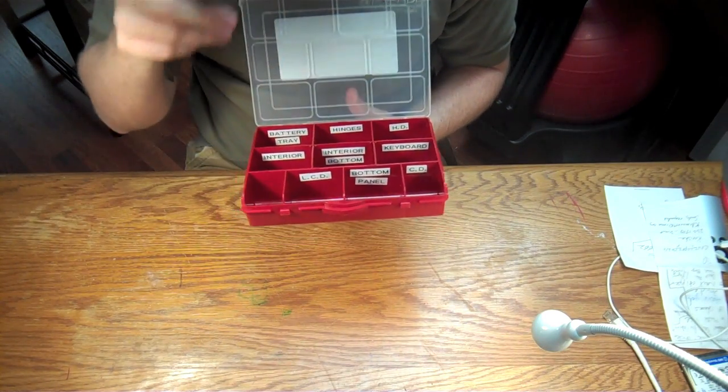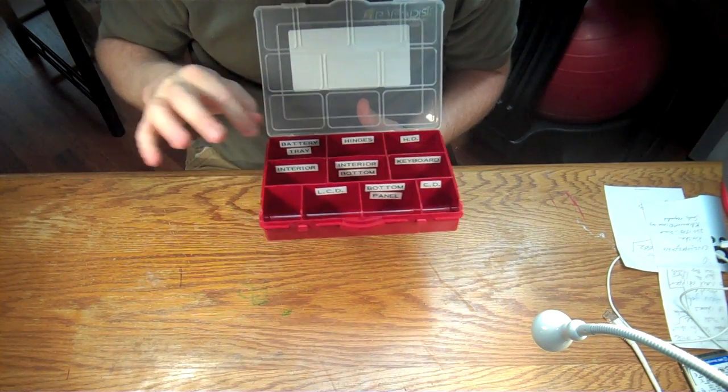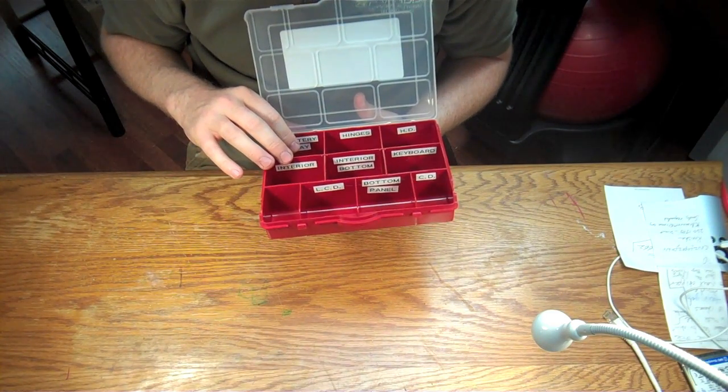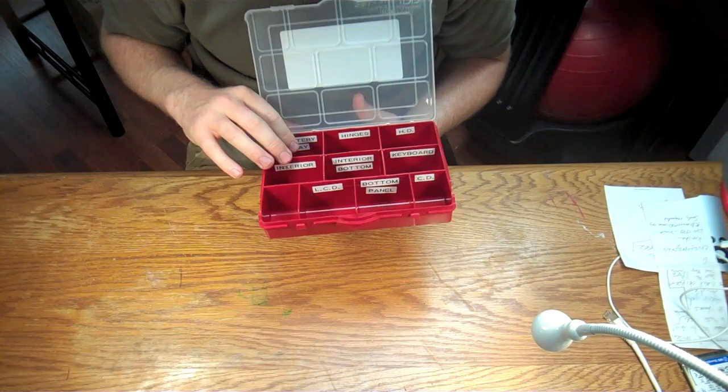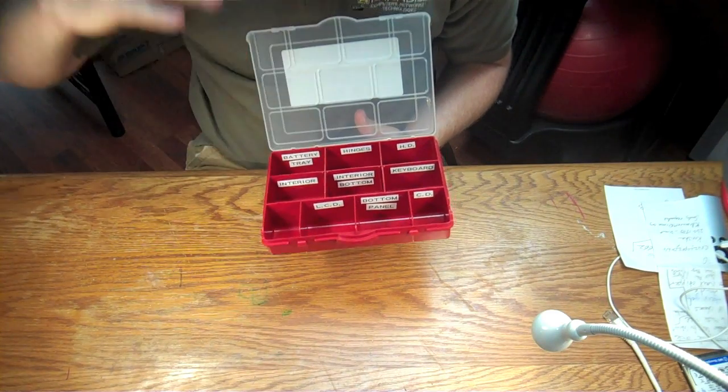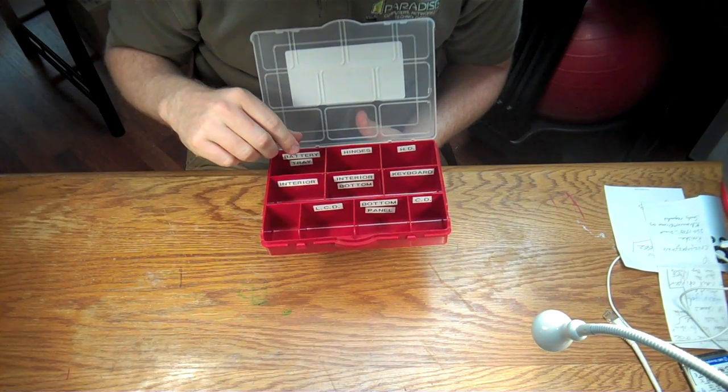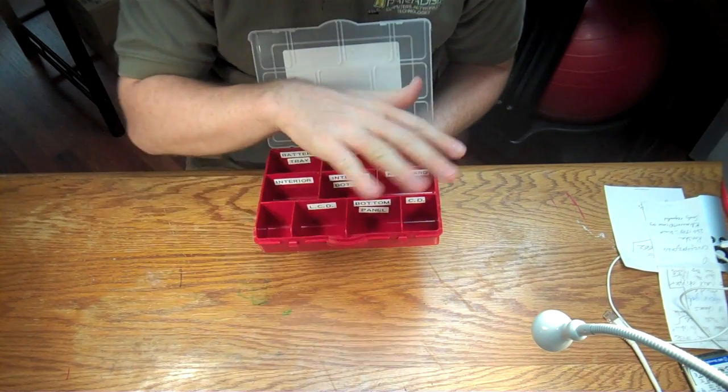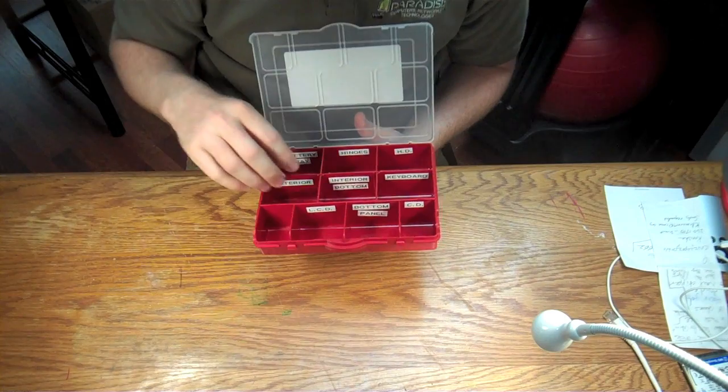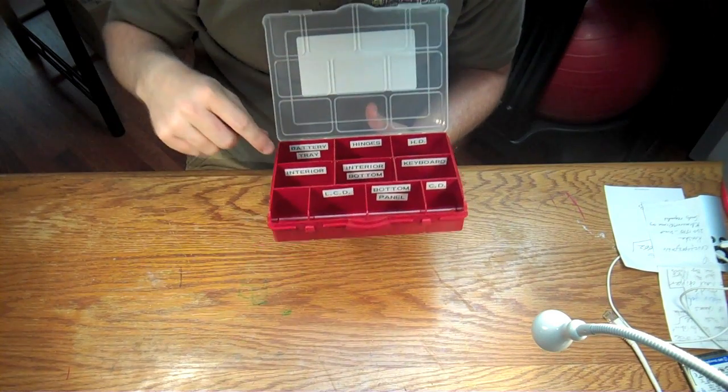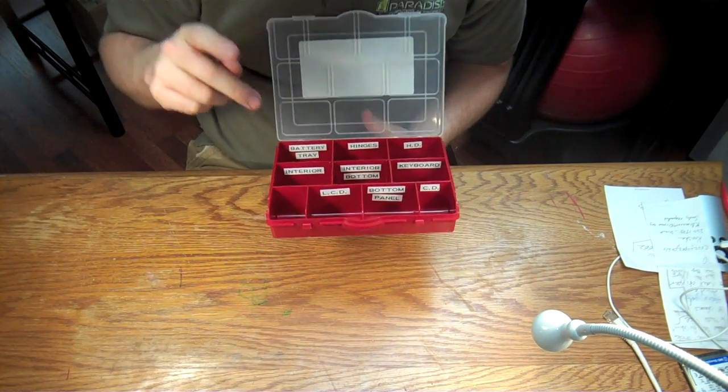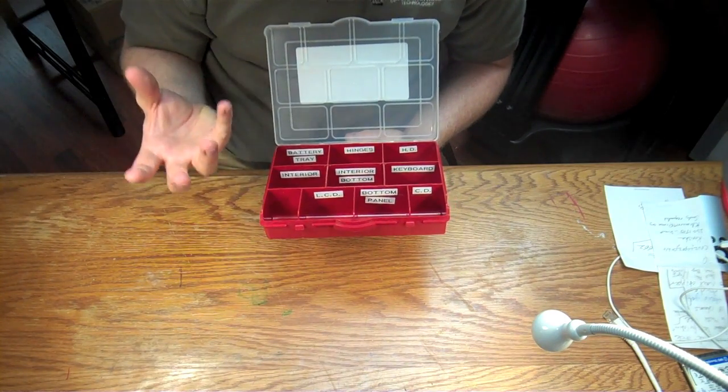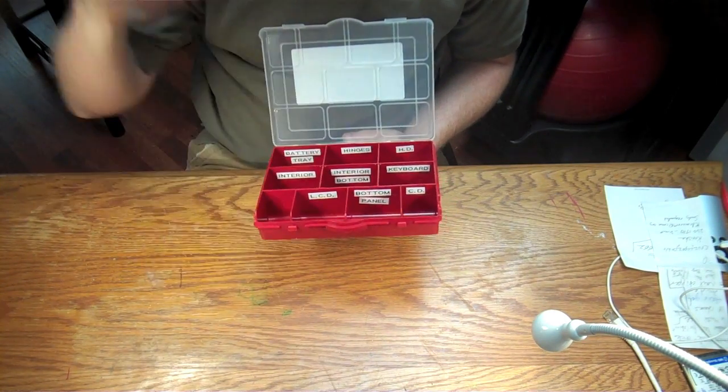A couple of these may not be obvious as to the rhyme or reason of the screws. Interior, I classify as any screws that I find that are underneath the keyboard in a laptop. That would mean from the top down. So if I'm pulling out a keyboard and I see screws on that top piece of plastic that holds the track pad and all that, I pull those out. If I get even further down into the motherboard, the motherboard screws go here into the interior bin. Interior bottom means I flipped the machine over and I pulled screws out of the bottom of the motherboard.